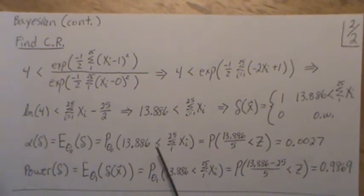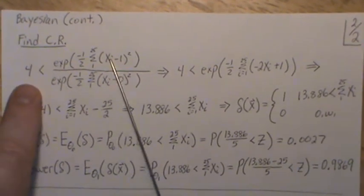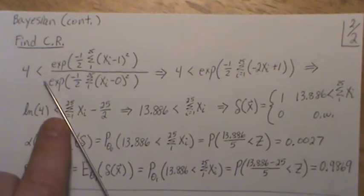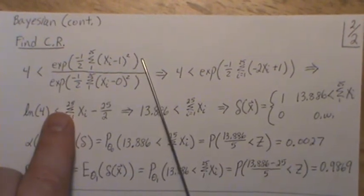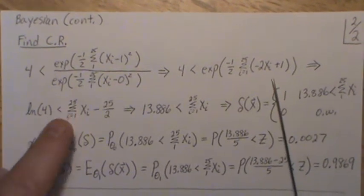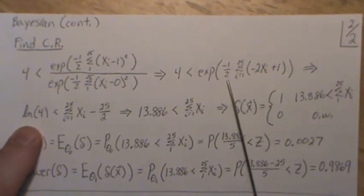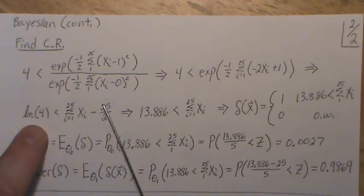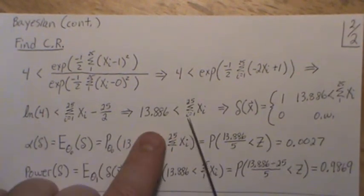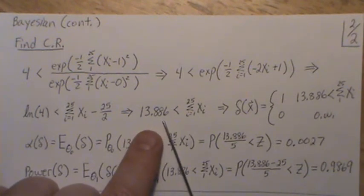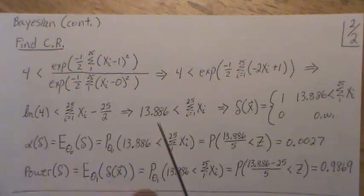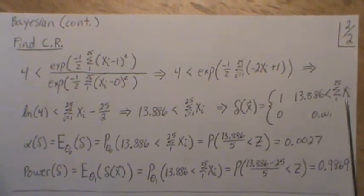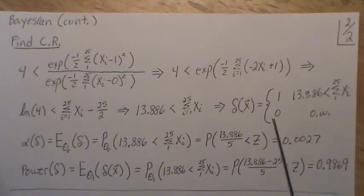Let's find the critical region. The likelihood ratio being greater than 4: going through the same math — the square root of 2-pi terms cancel, we move the exponential to the top, multiply in the one-half, and take the log of both sides. Adding terms to the other side, we get the sum of x_i's greater than 13.886. This is our critical region, so the decision function delta is 1 if the sum exceeds 13.886, and 0 otherwise.